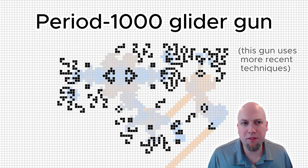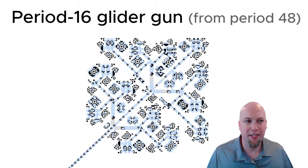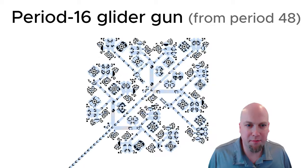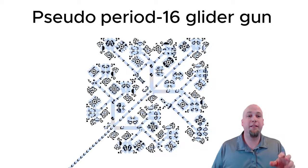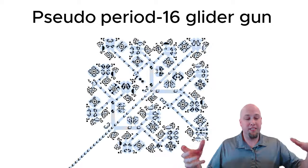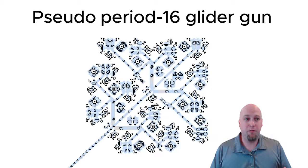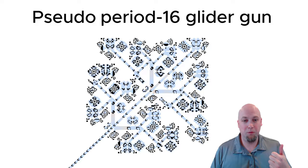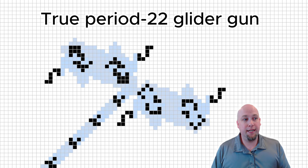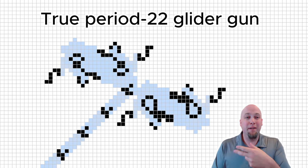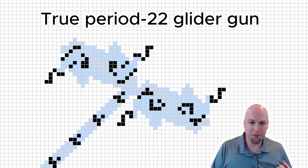But there was still something sort of unsatisfying about some of these guns, in particular the low period ones that we constructed by sort of combining glider streams together. These guns, they're called pseudo-period guns. Any gun that you construct by sort of taking higher period guns and just merging their streams, it's called pseudo-period. Whereas now the question became, can we construct what are called true-period guns of every single period? And a true-period gun, it's a gun where the period of the mechanism creating the gliders is actually equal to the period of the output glider stream.